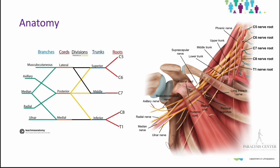Each of the three trunks divides into an anterior and posterior division behind the clavicle, giving three anterior and three posterior divisions. Anterior divisions represent supply to the flexor compartment and posterior divisions represent supply to the extensor compartments. The upper two anterior divisions unite to form the lateral cord, the lower one forms the medial cord, and the three posterior divisions form the posterior cord. The three cords then enter the axilla above the first part of the axillary artery, embrace its second part, and give off nerve branches around the third part.